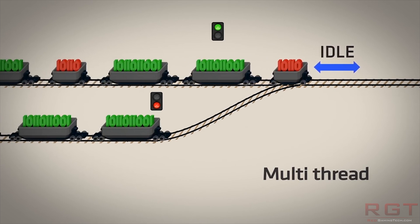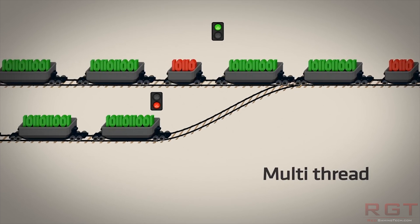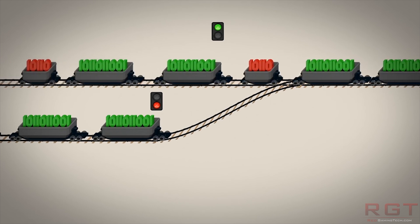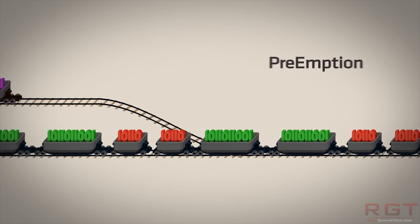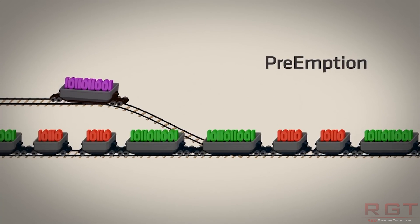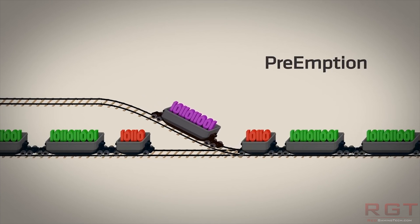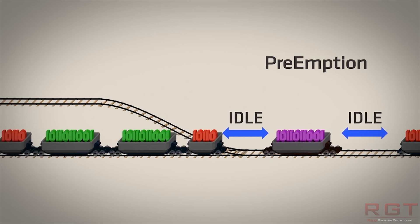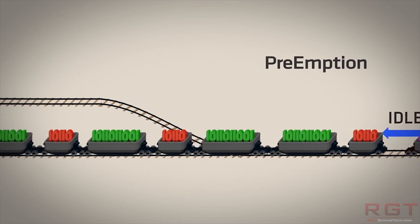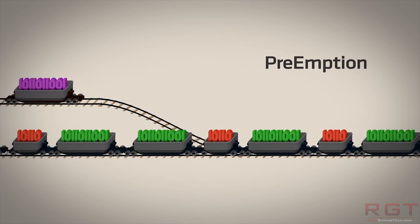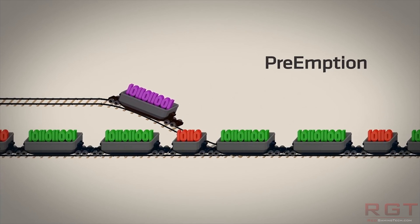No one's buying Vega 10 ultimately to play in 720p, 1080p, or perhaps even 1440p. Most of us are probably looking at it and thinking that would look pretty nice on a 4K television. Similarly, there are four texture blocks per each of these engines.